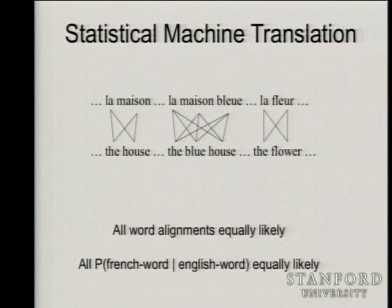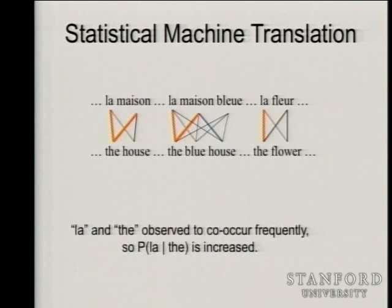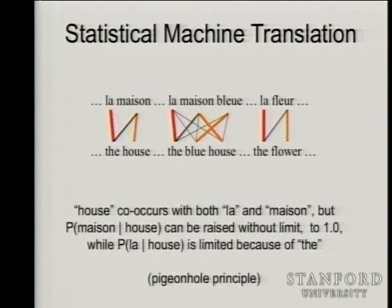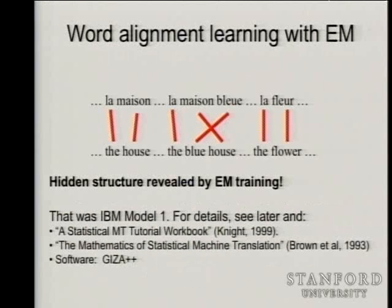You'll hopefully remember from last time that the general picture is that we've made this sentence-aligned data where, by and large, the sentences are aligned so that they're translations of each other. We're essentially then wanting to run this algorithm, which is looking at words that could translate each other and settle down and learn possible translations for a word, as in this baby corpus.